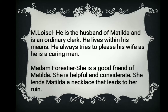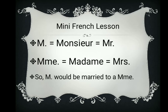The third character is Madam Forester — she is a good friend of Matilda, helpful and considerate. She lends Matilda a necklace that leads to her ruin. Matilda goes to her to borrow a necklace to wear to the party, but the necklace gets lost, and the real climax of the story begins from there. Note that in French, 'M' is used for Monsieur or Mr., and 'Mme' is the short form for Madame or Mrs.